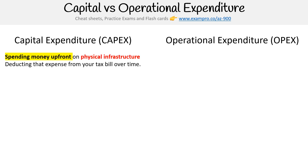Looking at capital expenditures: it's spending money upfront on physical infrastructure and deducting the expenses from your tax bill over time. A lot of larger companies are used to dealing with capital expenses and know how to work their tax bill. That's why a lot of people are afraid to move to the cloud, because they're used to this way of operating. But let's talk about some of the things that would be considered a capital expense.